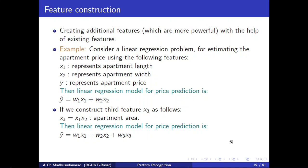Now with this third additional feature, using our training samples, we find the mean square error loss and apply gradient descent algorithm to minimize it. Finally, we obtain a solution w1, w2, w3 — and this model will be far better compared to the first model. This is how feature construction helps us.